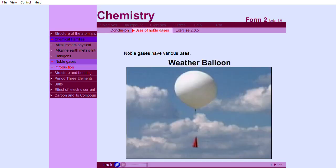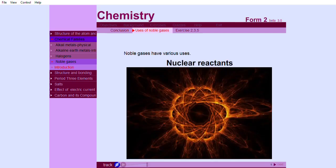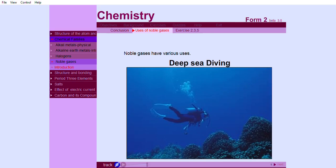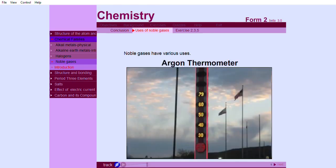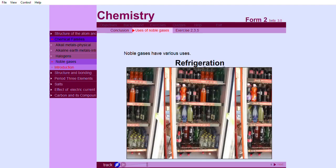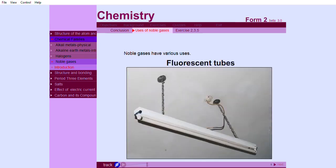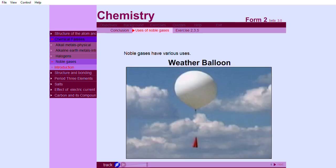Noble gases have various uses. Helium is used in weather balloons, nuclear reactors as a coolant, deep sea diving when mixed with oxygen, and thermometers that measure very low temperature.